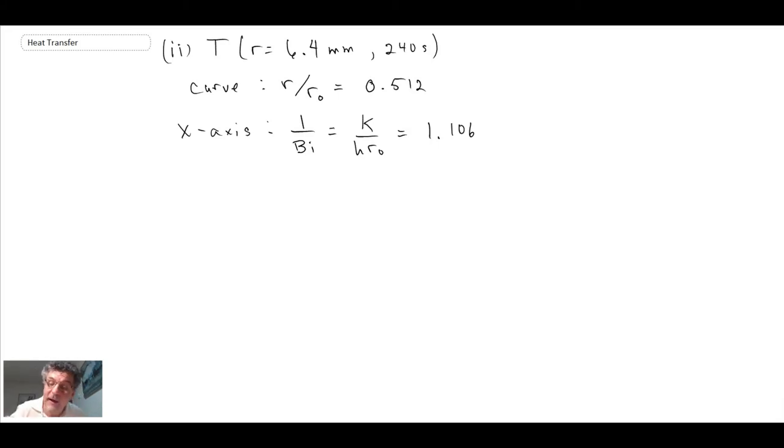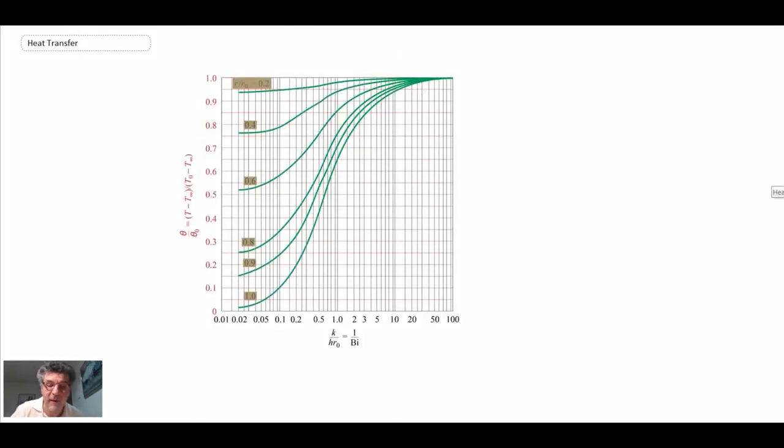And those were the curve that we were reading in the previous graph when we were looking at the Heisler chart for the centerline temperature. Okay, so with that now we go to our graph and we take those two. So this is the graph for what happened spatially. You can see on the left we have theta over theta naught, on the bottom we have one over the Biot. So we were looking at one over a Biot number of 1.1. There's one, there's two, 1.1, I don't know, it's probably someplace right in there. You can see when you're using the charts you're doing a little bit of guessing.